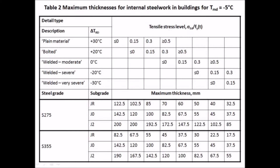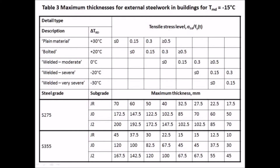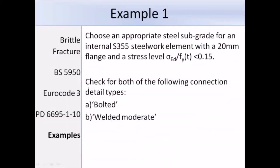This is Table 3, for external steelwork where the surface temperature is minus 15 degrees Celsius. This is used the same way as Table 2, so I won't talk about it too much. Instead, we'll move on to the examples. I have two brief examples that I'm going to run through, and hopefully they will help you obtain a better understanding of how to determine a steel subgrade using the published document approach.